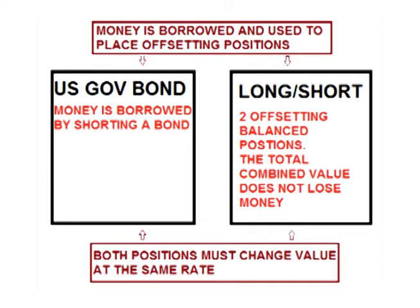Theoretically, using borrowed money at the risk-free rate by shorting a bond, one would be able to place two offsetting positions that combined make a profit that exceeds the interest on the bond, yet the total position has no risk of losing money. Since the position would pay a higher rate of return than the interest cost on the loan and there would be no risk of losing money, it would be the same as making free money.